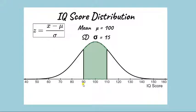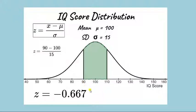So for a raw score of 90 this would be 90 minus 100 or minus 10 divided by 15 equals negative 0.667. And for 110 it would be 110 minus 100 or 10 divided by 15 which would equal positive 0.667.